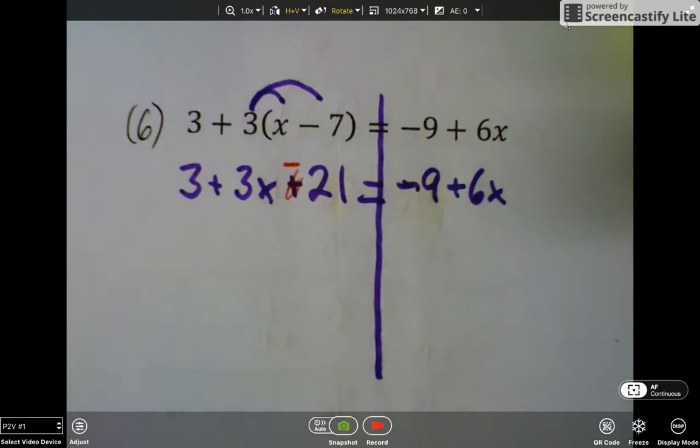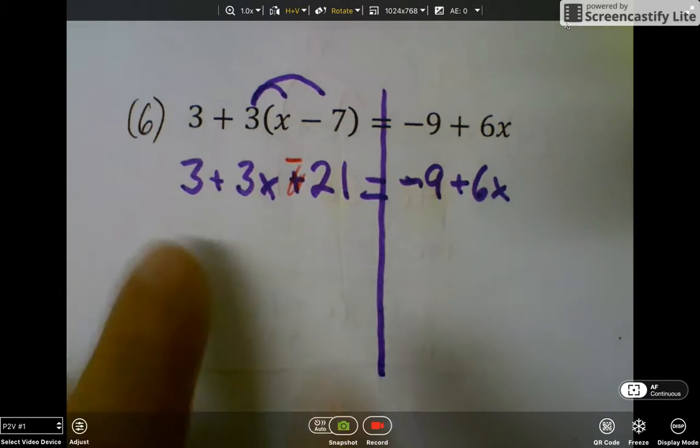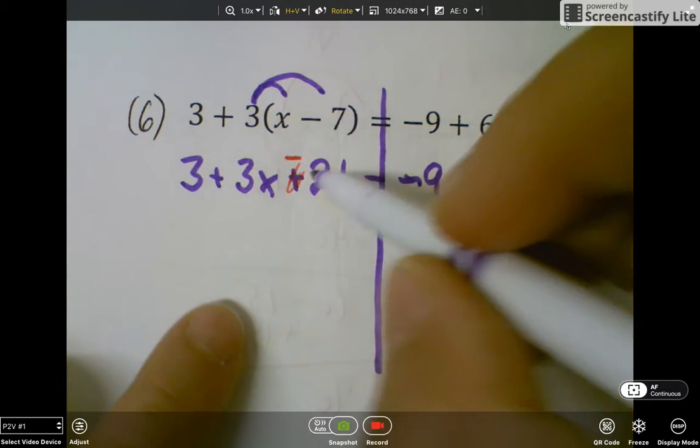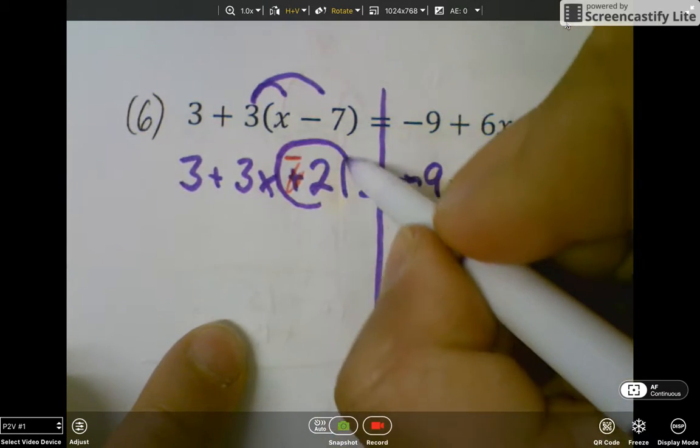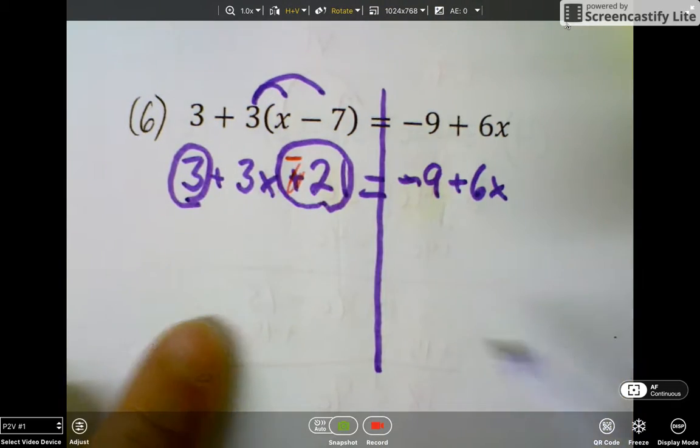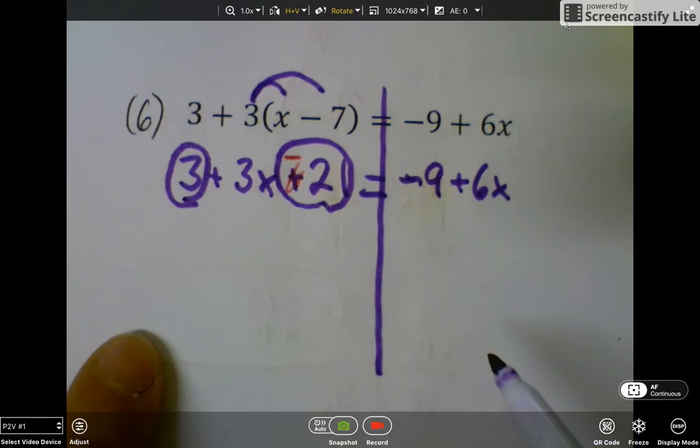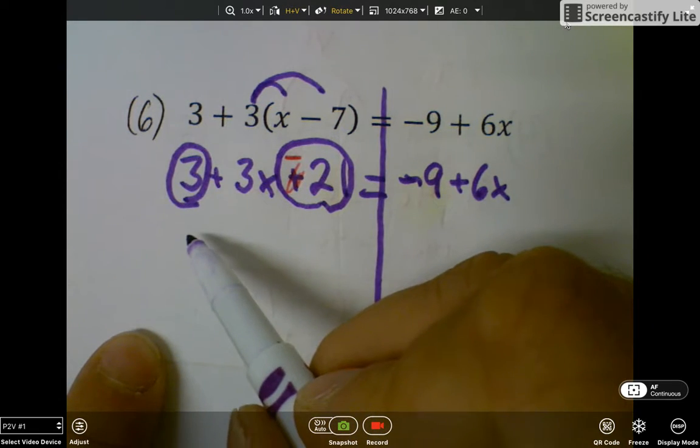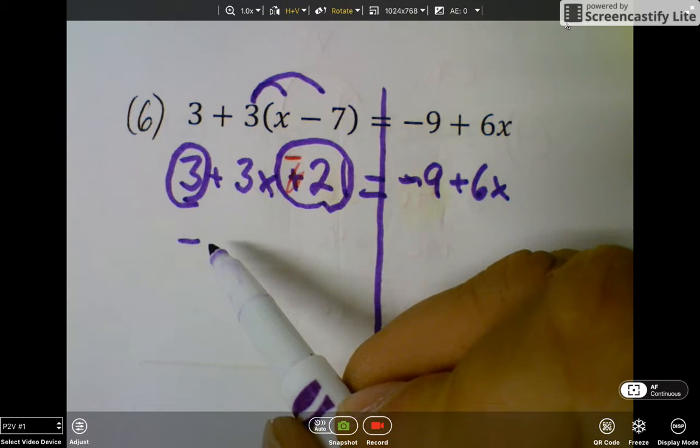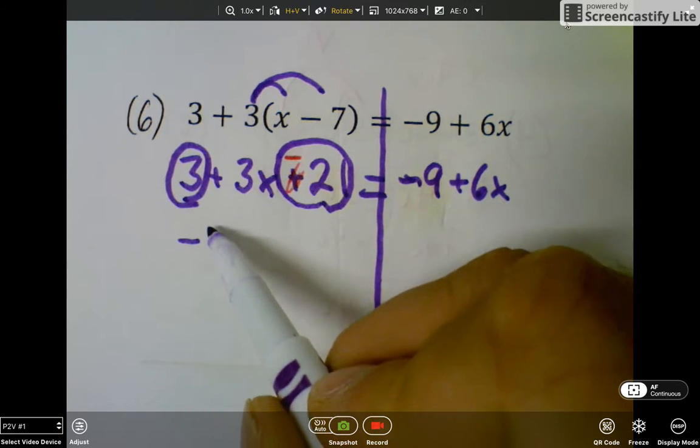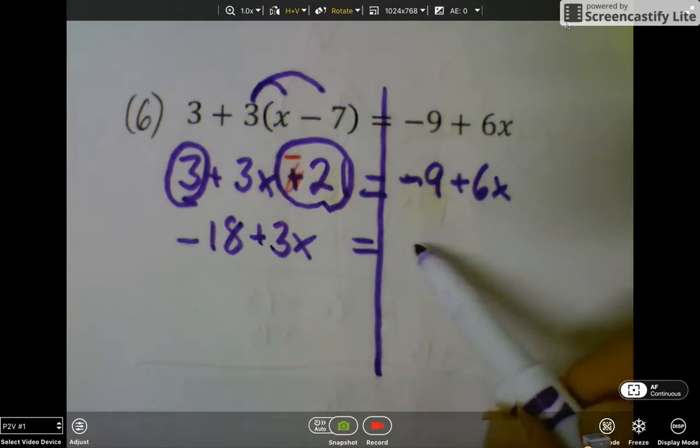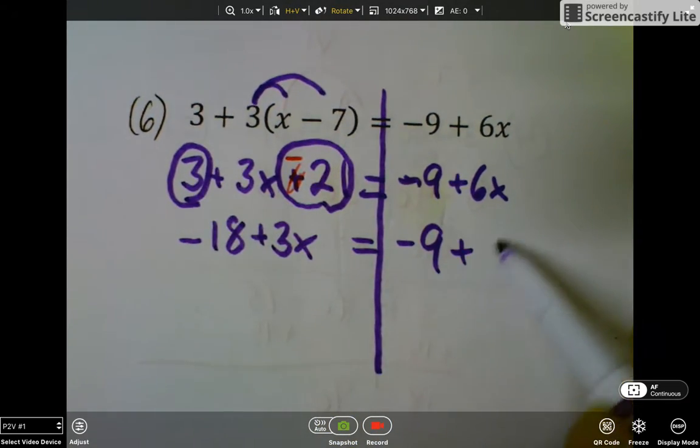Alright, the next step I need to do is still on the left side I need to combine some like terms. So the like terms that I see, I have a negative 21 and I have a positive 3. When I combine those, negative 21 plus 3 is going to be, there's more negatives, negative 18 plus 3x equals negative 9 plus 6x.